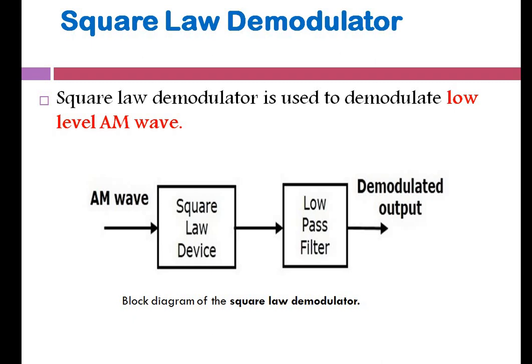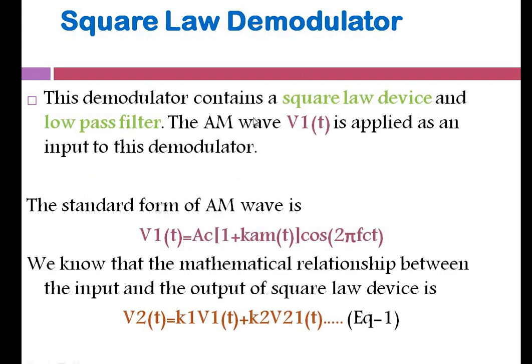To extract the original message signal from that kind of amplitude modulated wave, we use the square law demodulator. The block diagram of the square law demodulator consists of a square law device, a low pass filter, and the demodulated output. For the square law device, we will be using a diode. The amplitude modulated wave is given as the input signal, and that input is passed through the low pass filter to remove the unwanted signals and give only the original message signal, which is a low frequency signal.